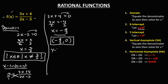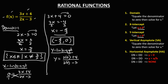For the y-intercept, we let x equal to 0. From this given, y equals 3 times 0 plus 4, over 2 times 0 minus 3. So y equals 4 over negative 3, which is negative 4 over 3. The coordinate for the y-intercept is (0, negative 4 over 3).